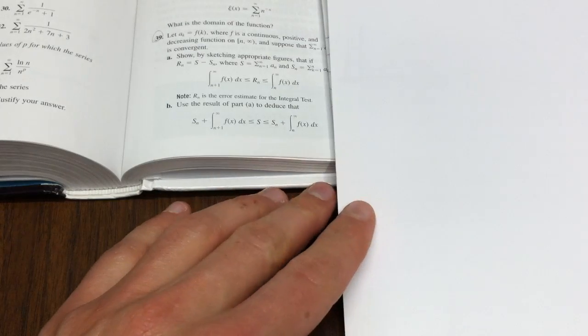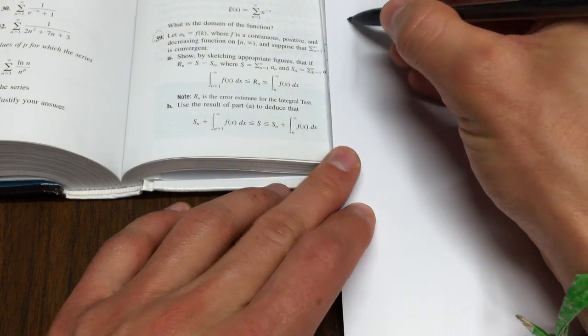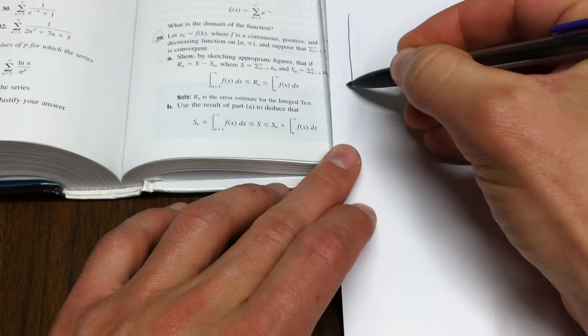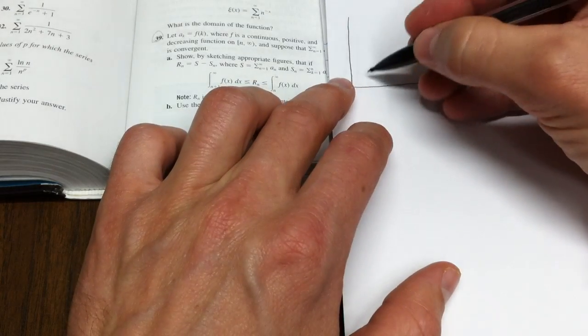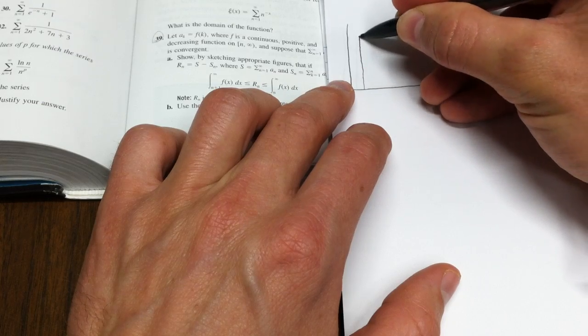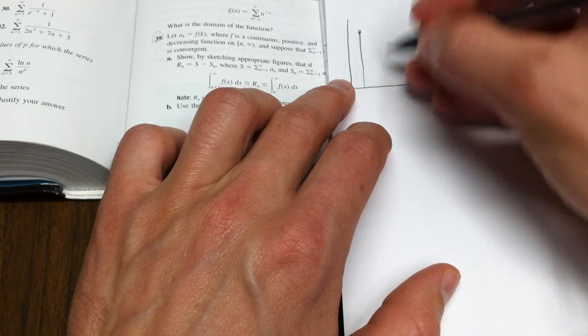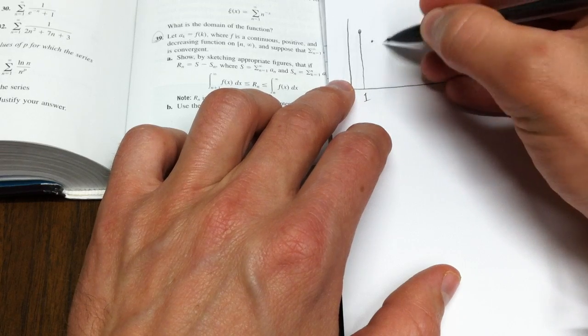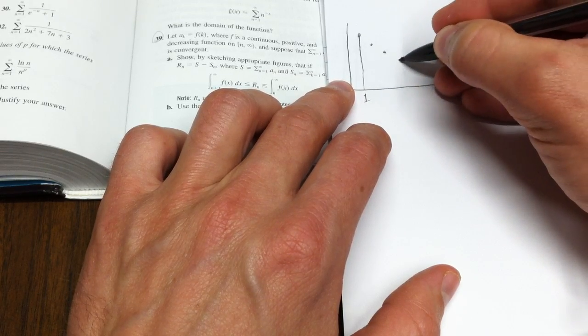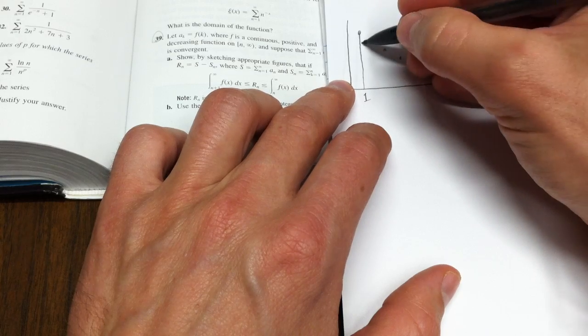Well, this really goes back to, sort of fundamentally, what the integral test is. You think about the integral test, and the integral test basically says this. If we put down a height here at 1 for a1, and here's a2, and here's a3, a4, a5.